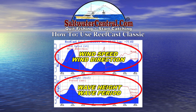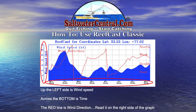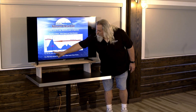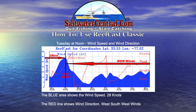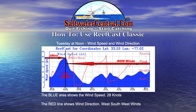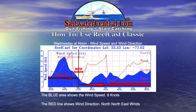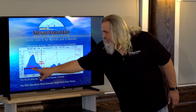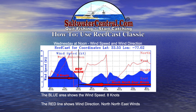Up the left side is your wind speed, and the bottom is your timeline. We come over to Tuesday at noon, come up to the top where the blue blob hits it, and we read it over here on the side — 28 knots. Same thing for the wind direction: we come over to where the red line is and read it — west-southwest. For Wednesday at noon, you come up to where the blue blob is and read it over here on the side — eight knots. Come up to the red line — north-northeast.